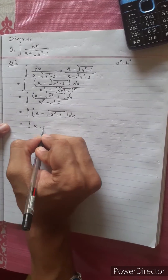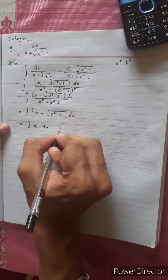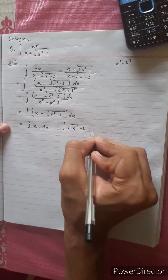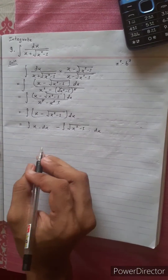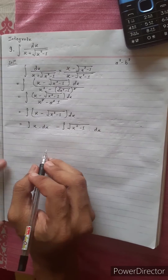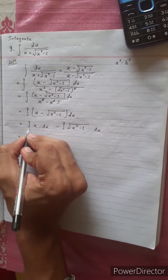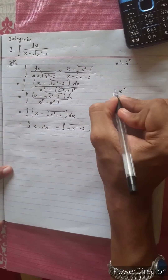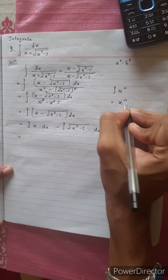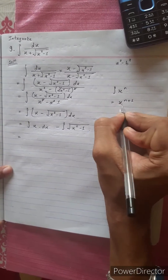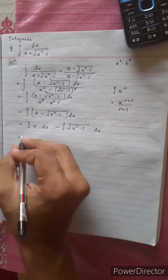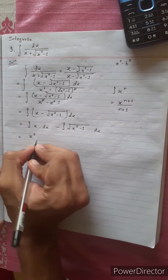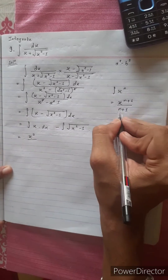Integration of x into dx minus integration of x squared minus 1 into dx. This is the first part of the integration. Using the formula x power n equals x power n plus 1 divided by n plus 1: x power 1, so 1 plus 1 is 2, giving x squared divided by 2.